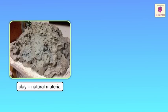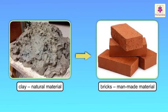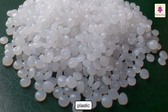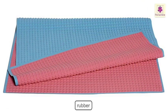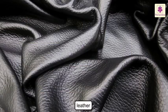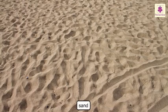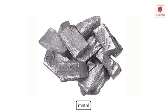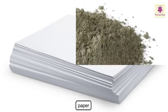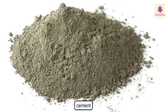Many times a natural material like clay is used to make a man-made material like bricks. Similarly, glass, plastic, rubber, leather, sand, metal, paper, and cement are different materials that we use to make different things.